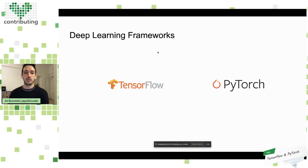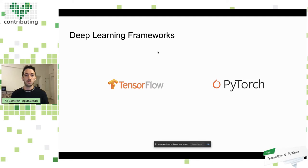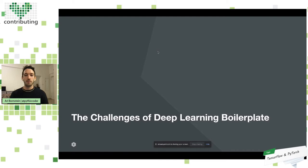Within machine learning, there's a subset of algorithms that use neural architectures — these are deep learning algorithms. Typically when you're writing deep learning algorithms today, you don't just go and start writing from scratch in Python or C like you used to. You use deep learning frameworks. The two most popular deep learning frameworks are TensorFlow and PyTorch. What I'm going to talk about today is a new topic: the challenge of the deep learning boilerplate.